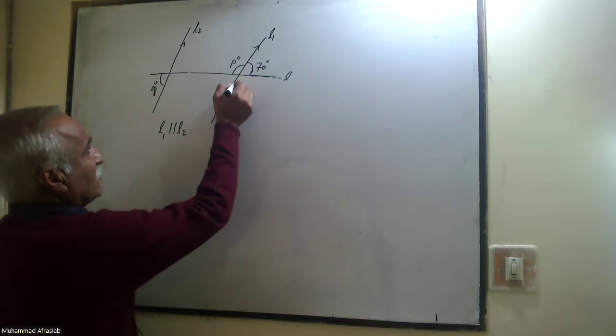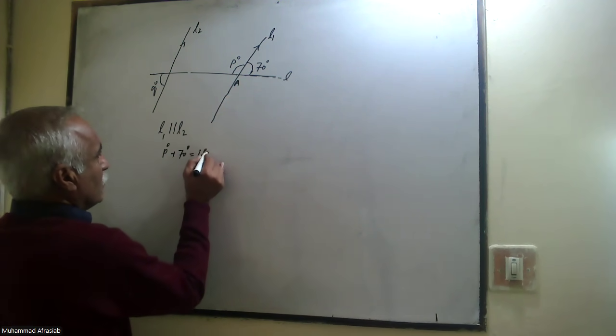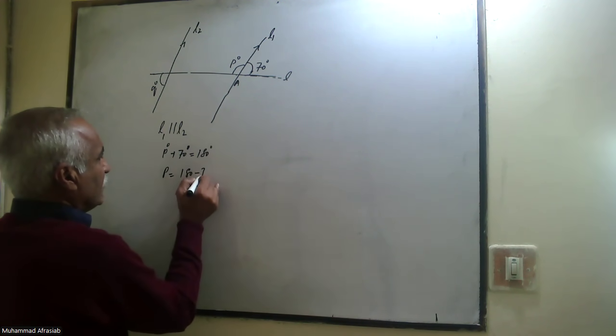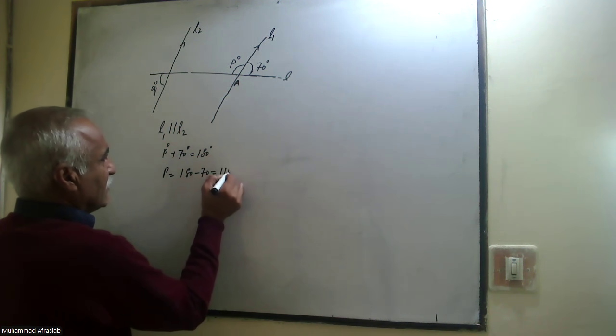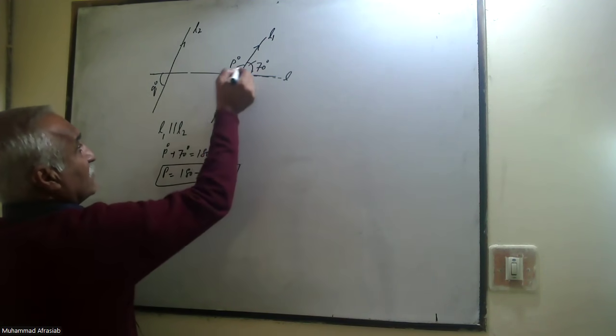Since we know that at this point A, p degrees plus 70 degrees should be equal to 180 degrees, p equals 180 minus 70, which equals 110. Then we know that this angle is equal to that angle.